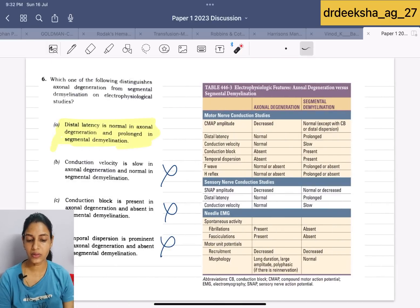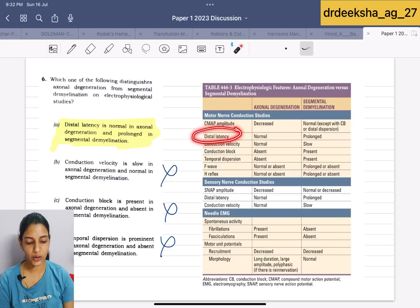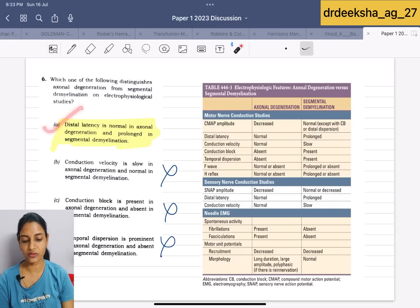Next, they are talking about the axonal degeneration versus segmental demyelination in electrophysiological studies. Again a chart from Harrison. Axonal degeneration was compared with the segmental demyelination. If we talk about distal latency, then in the axonal degeneration, it is normal while in case of segmental, it is prolonged. The first statement is true. Rest regarding conduction velocity, conduction block and temporal dispersion is wrong. Why? Because conduction velocity is normal in axonal while slow in segmental, both conduction block and temporal dispersion are present in segmental, not in axonal. The answer for this is 1.